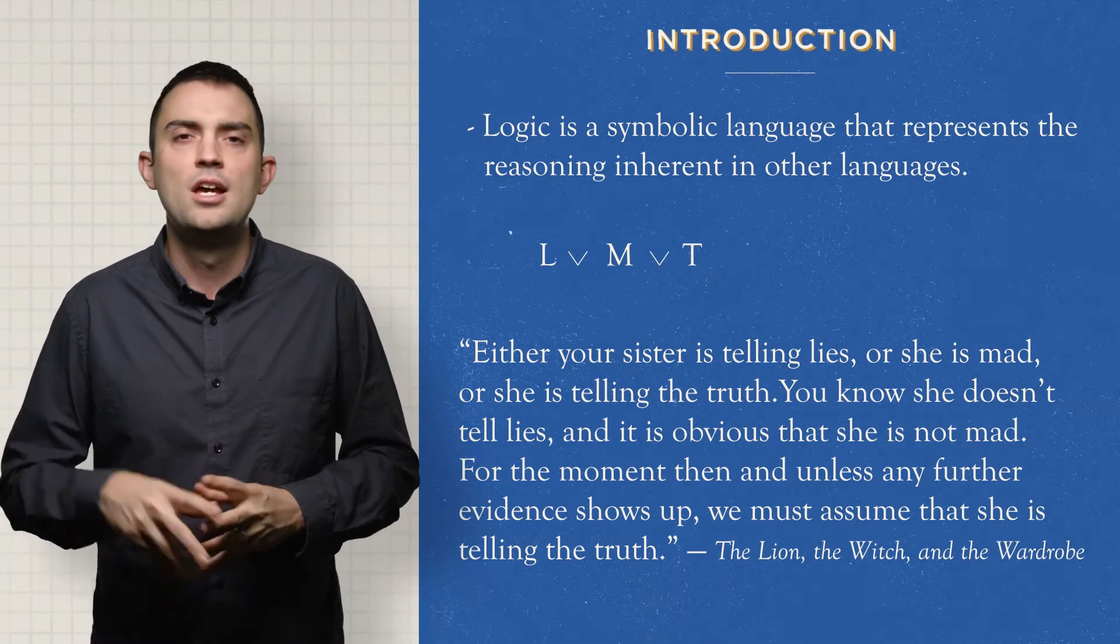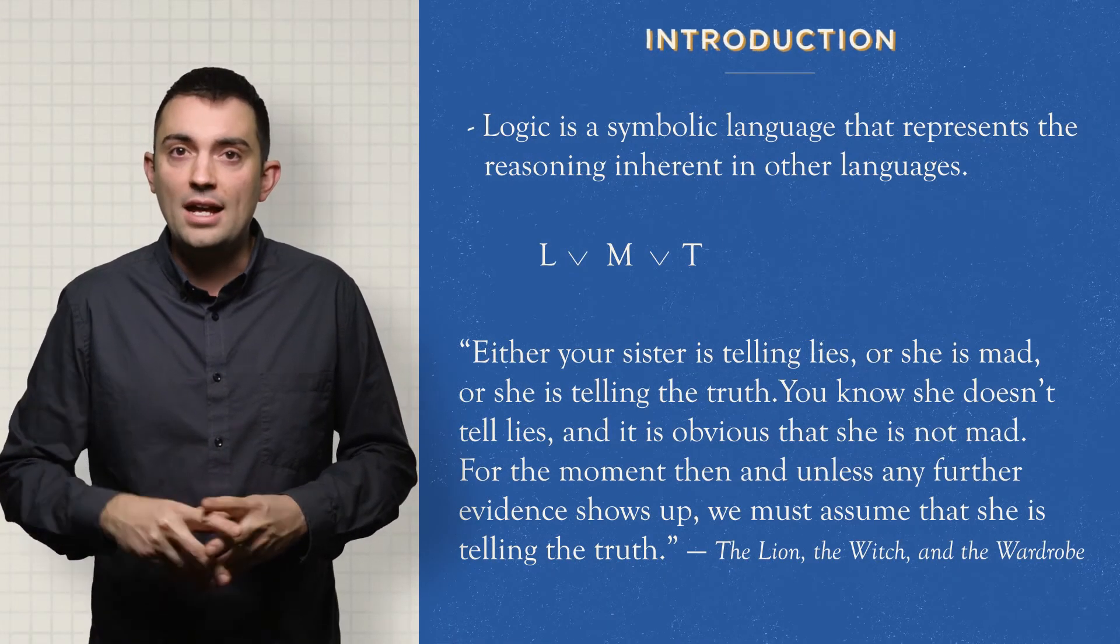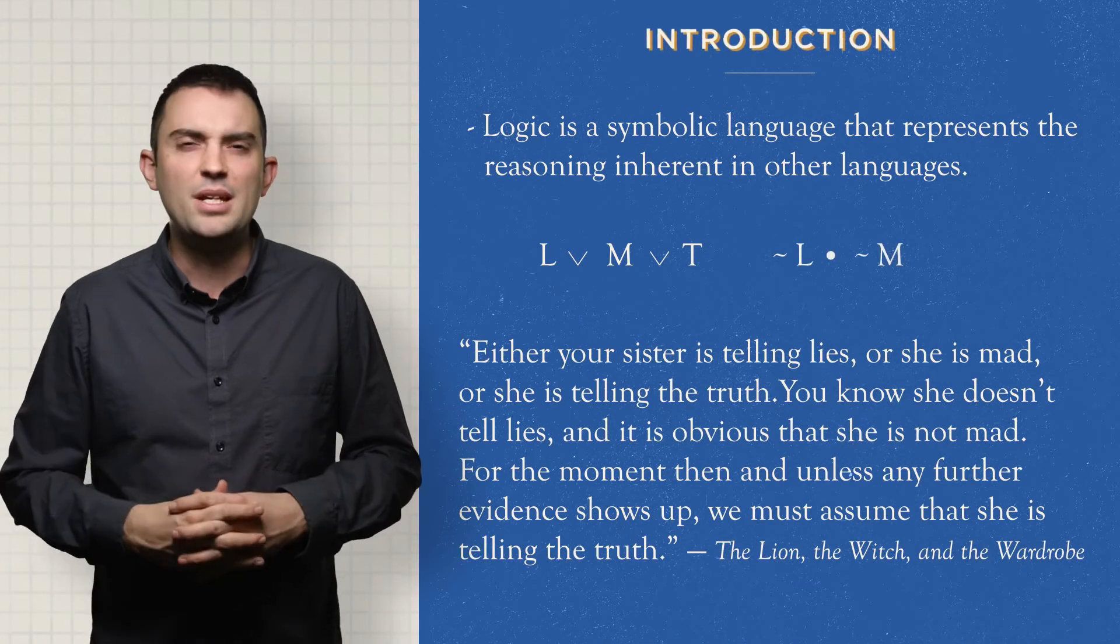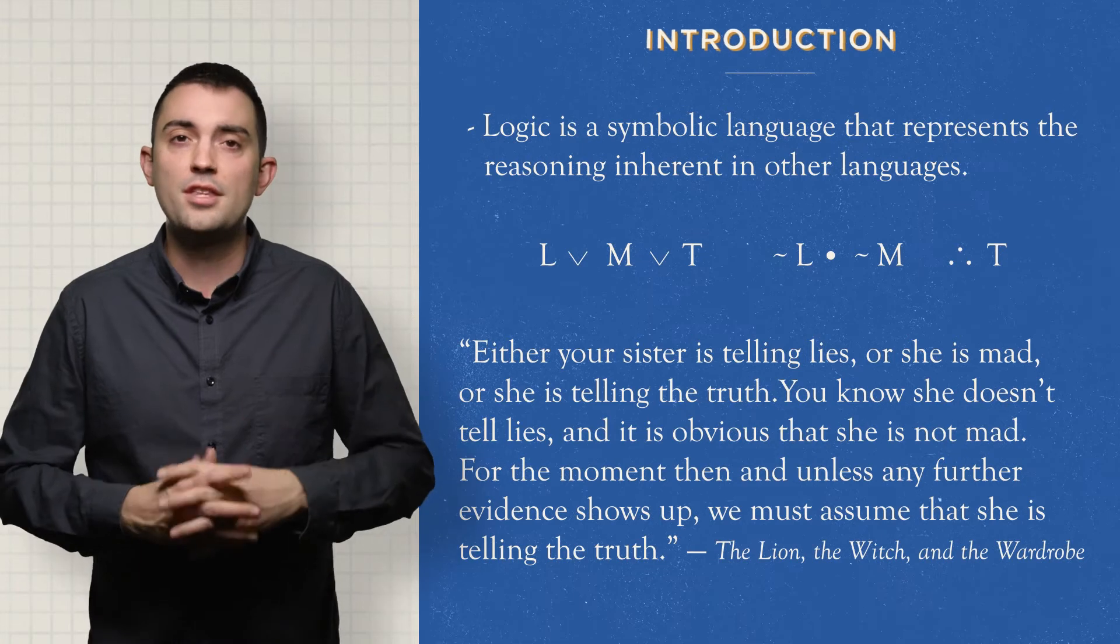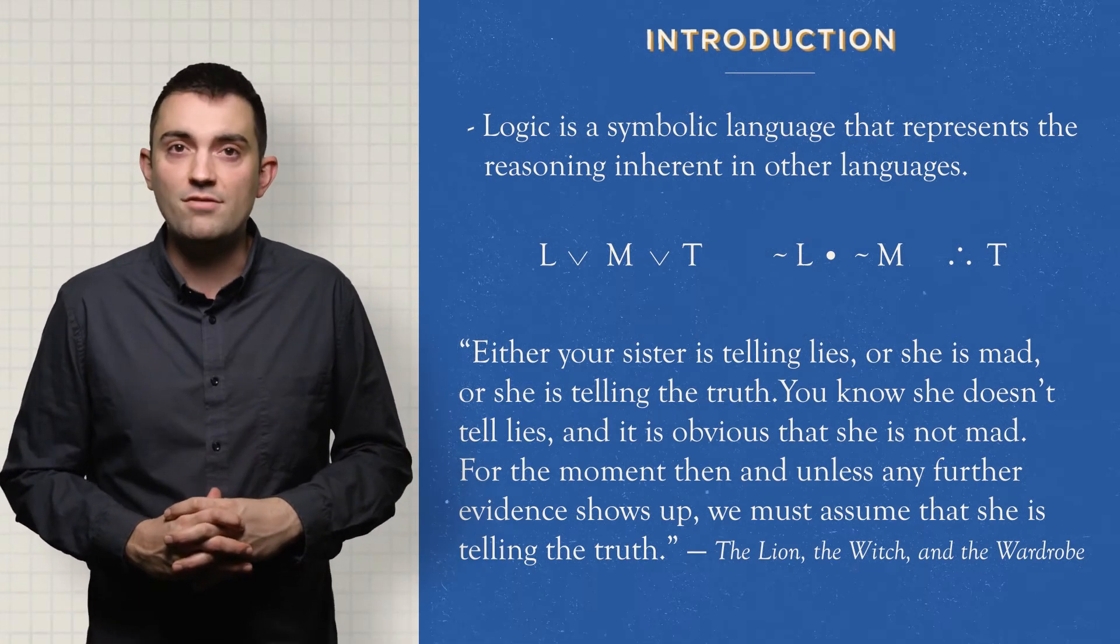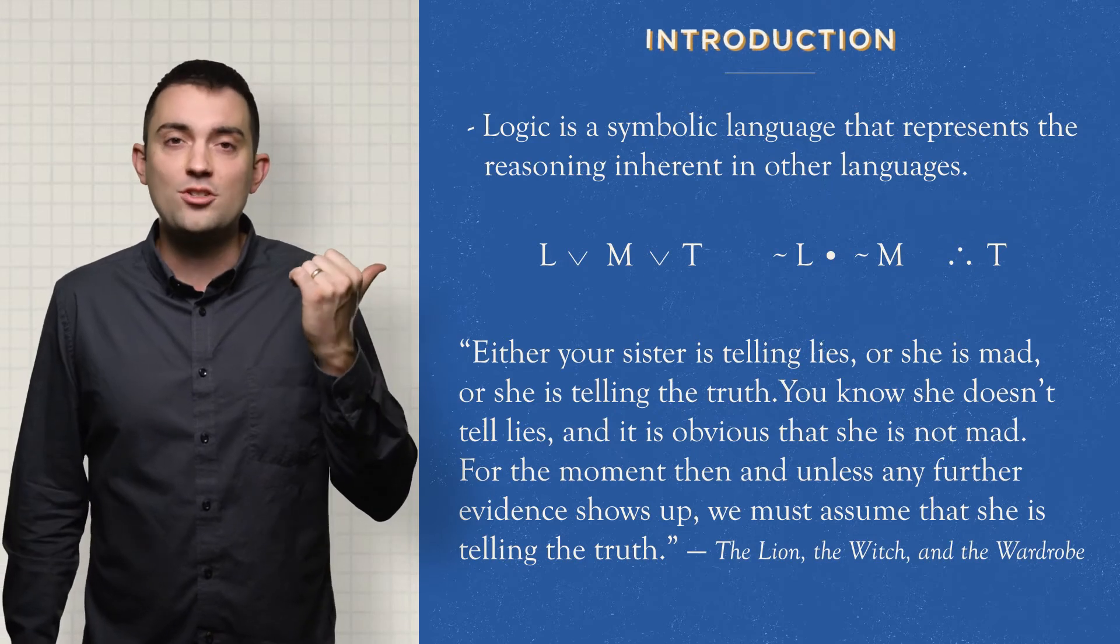The little V's are OR symbols. Don't worry about that, we'll learn it all later. She does not tell lies, and she's not mad. Not L and not M. The big dot is an AND. Therefore, she must be telling the truth. Therefore T. The three dots are the therefore symbol. You remember that already from intro logic. So that is a symbolic representation of Professor Kirk's argument.